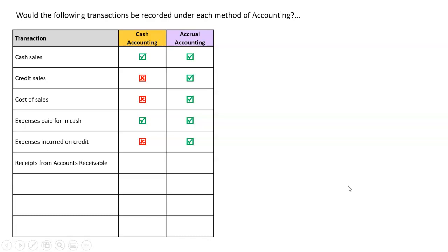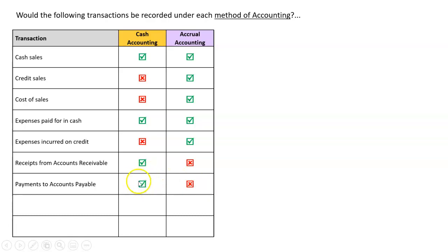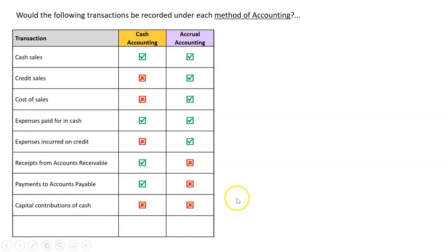Receipts from accounts receivable are treated as revenue received under cash accounting even if they belong to a different period, but under accrual accounting they are not a revenue. Similarly, payments to accounts payable appear as an expense under cash accounting but not under accrual accounting. If the owner contributes capital, that is not a revenue under either system, and drawings are not an expense under either method.